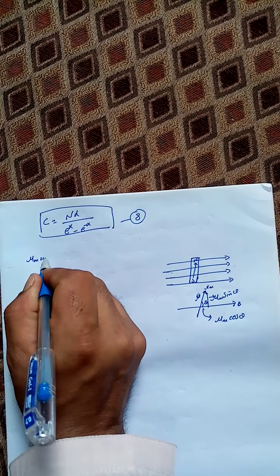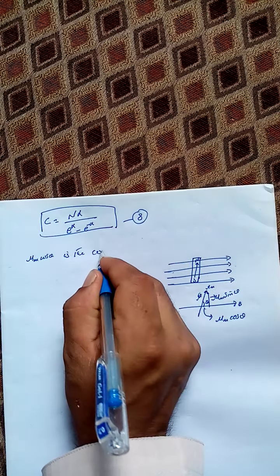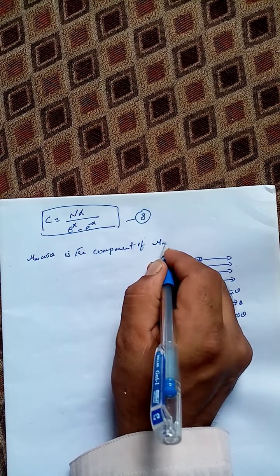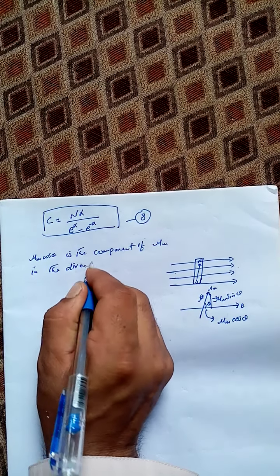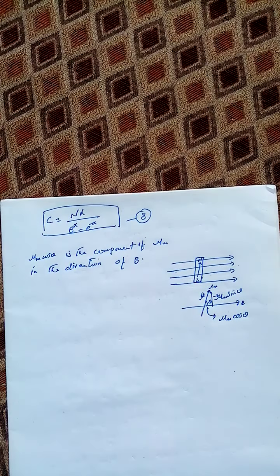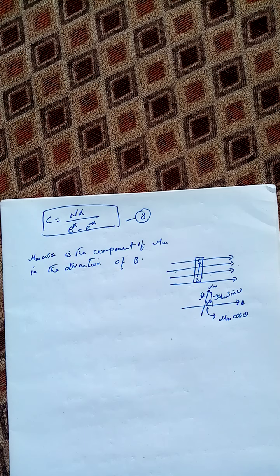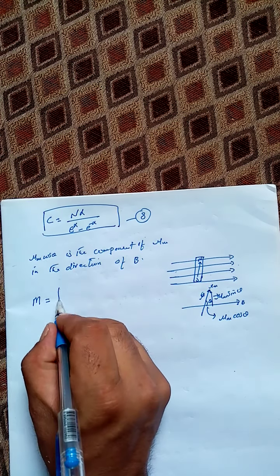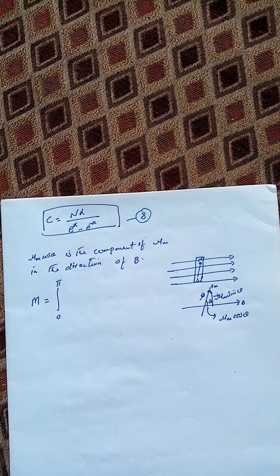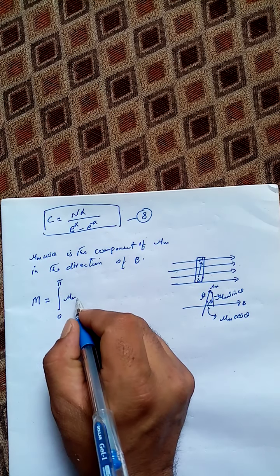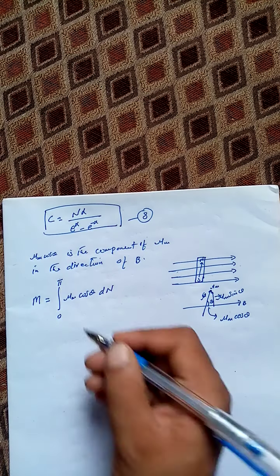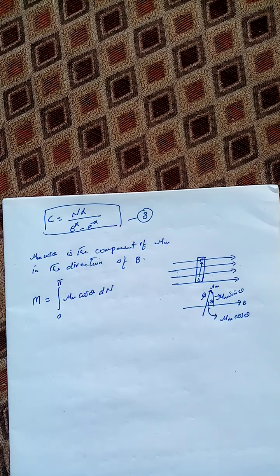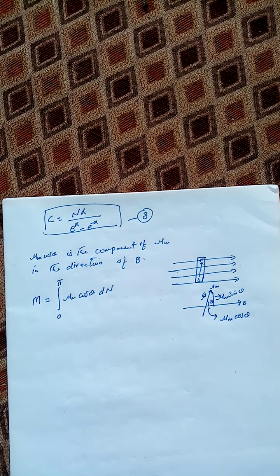μM cosθ is the component of the magnetic dipole moment in the direction of the magnetic field B. The total dipole moment per unit volume is called magnetization M, defined as the integral from 0 to π of μM cosθ times dn, where dn is the small number of particles in a unit volume.